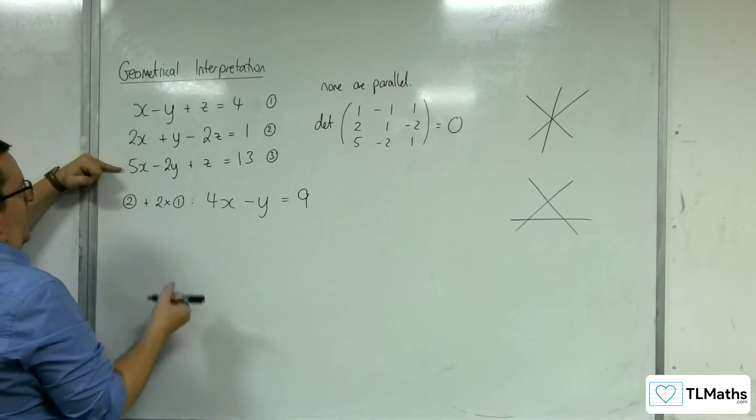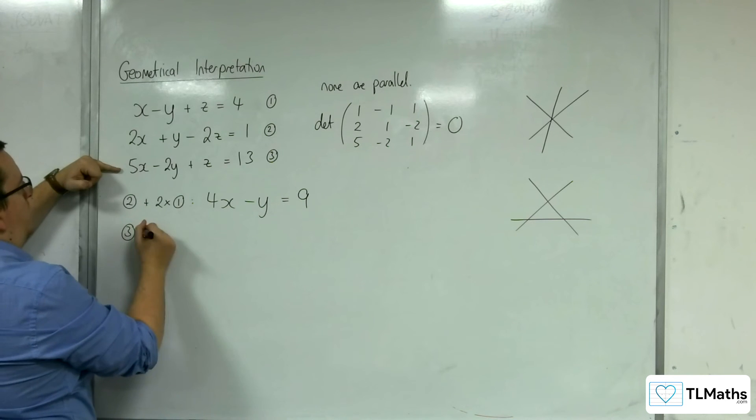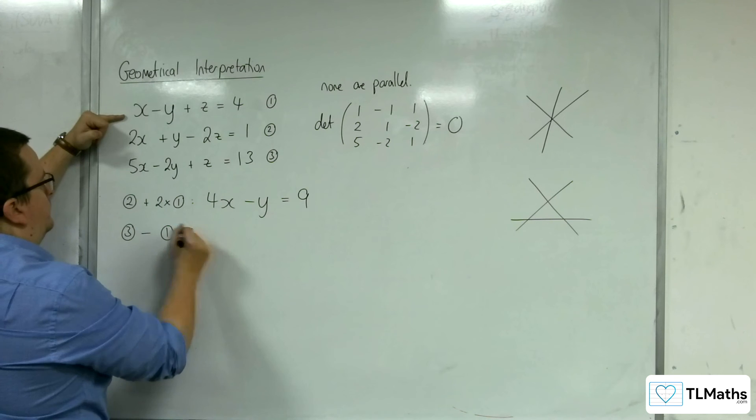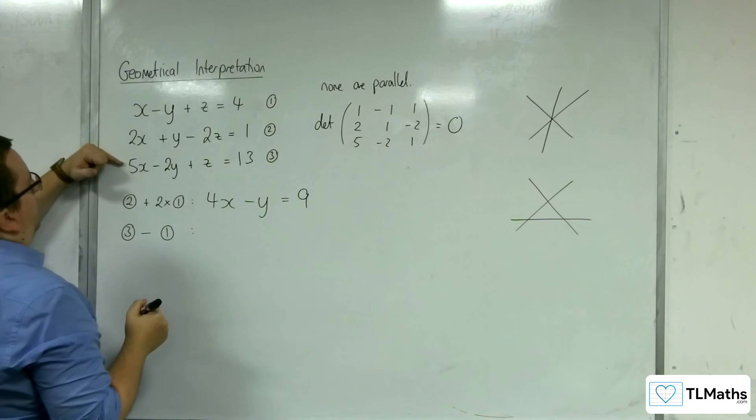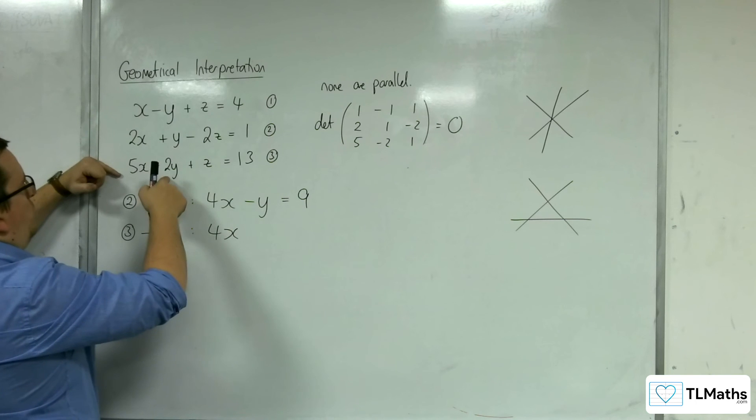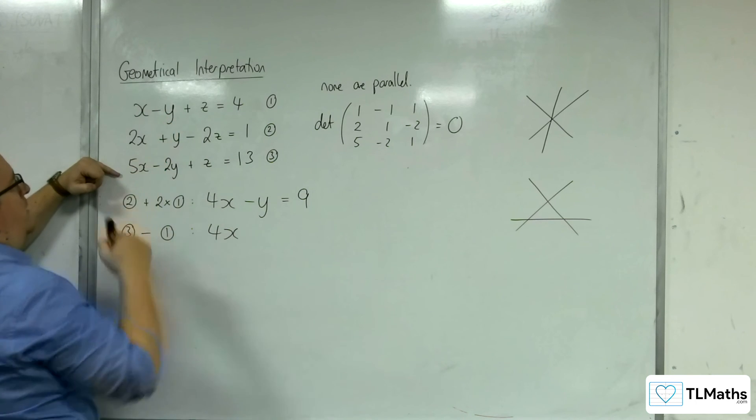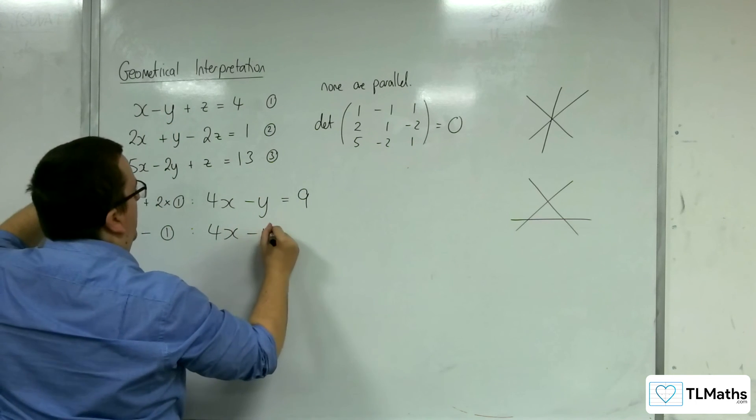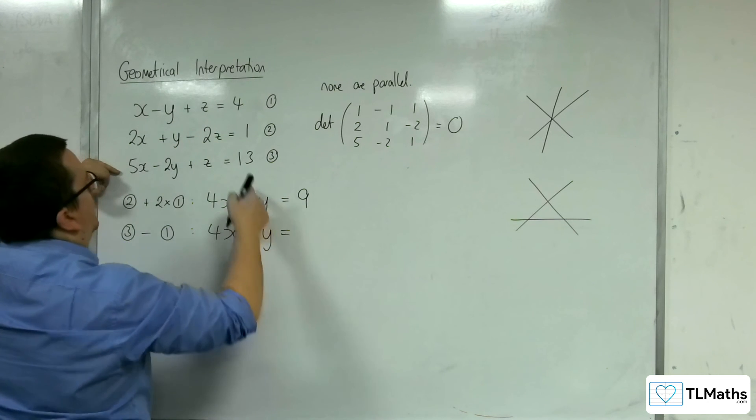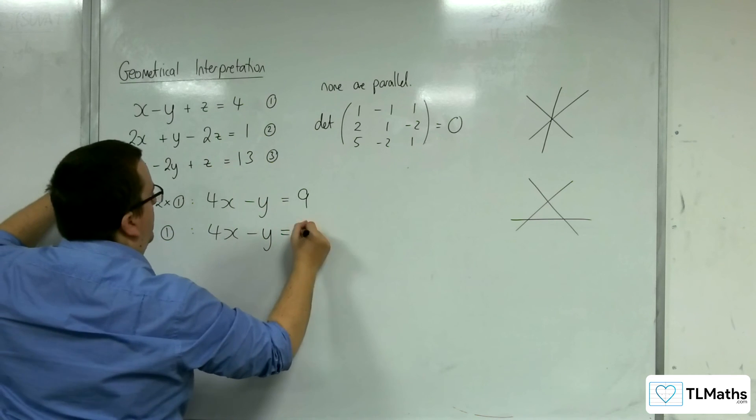Right. So we've done that one. So now let's do equation three take away equation one. So five x take away x is four x. Minus two y take away minus y gets me minus y. Z take away z is zero. Thirteen take away four is nine.